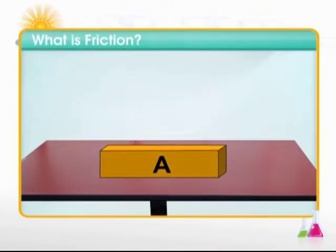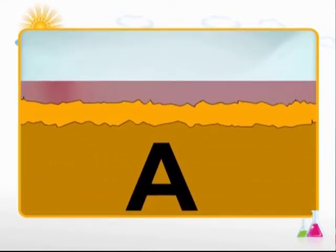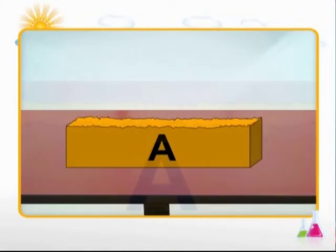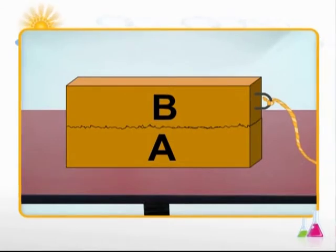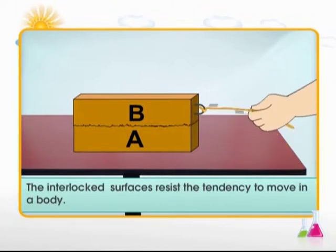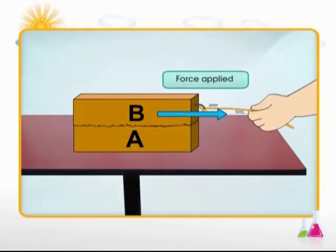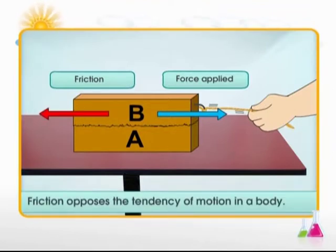Let's consider a box that appears to be smooth macroscopically. Any surface, no matter how smooth it appears, has large number of irregularities on it at microscopic level. The moment any surface B is placed on A, interlocking of irregularities takes place. These interlocked surfaces will resist any tendency to move. Due to the interlocking of irregularities, there appears a force that always opposes the motion between the two surfaces. This opposing force is called friction.